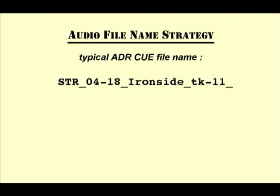Audio file name strategy for ADR work. If you hope to find a particular ADR cue quickly and efficiently amid the hundreds — sometimes even thousands — of ADR cues in a given project, you need to adopt a structured and disciplined protocol to name the ADR audio cues. Note the three-letter abbreviation for the show. This can be really handy, especially if you are working with multiple projects or dealing with archived material pulled out to make a television version or a revised director's cut. If the post-production facility is working on more than one project at the same time, this technique is even more vital.